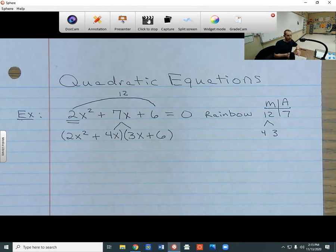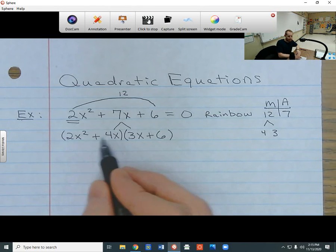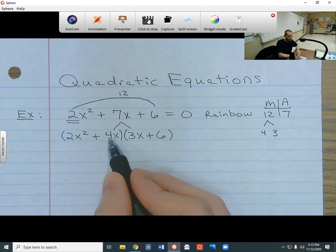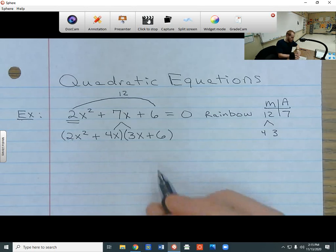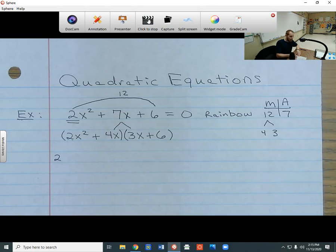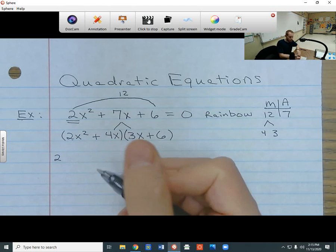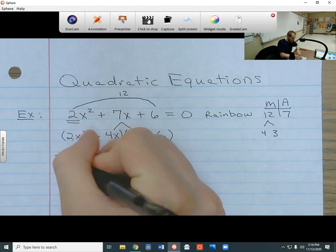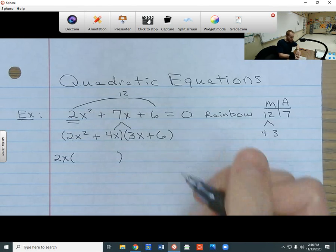Now I need to take out the greatest common factor from both of the groups. So what do these two terms have in common? Well, I know that I can divide both of these coefficients by 2. Since 2 can be divided by 2 and 4 can be divided by 2, I know for a fact that I can take a 2 out. But I also know that both of these contain an x, so they have that in common as well. So I put an x on the outside, and inside the parentheses, I have whatever's left.